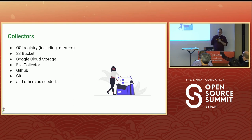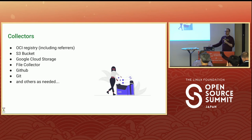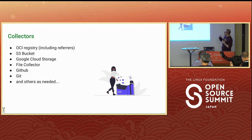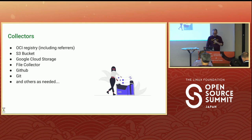As for collectors, we have OCI registry support — we can pull containers, SLSA, SBOMs, etc. from a container registry. We can pull from S3 buckets, Google Cloud Storage, file collectors, GitHub releases, and directly from Git. If there are other places folks want us to pull from, we can do that as well — pull requests are welcome.